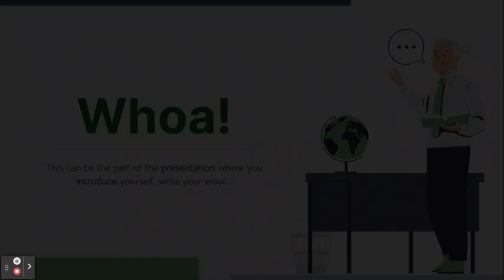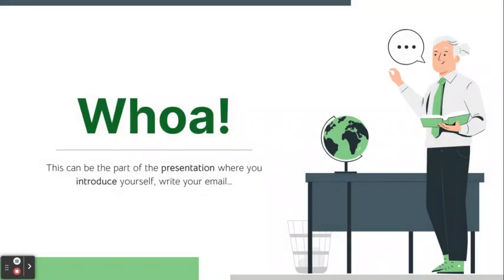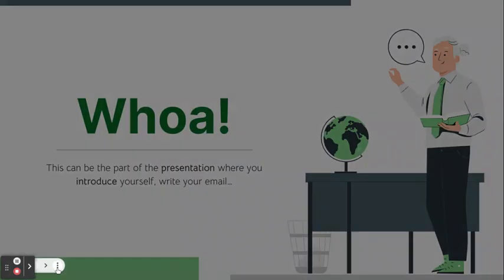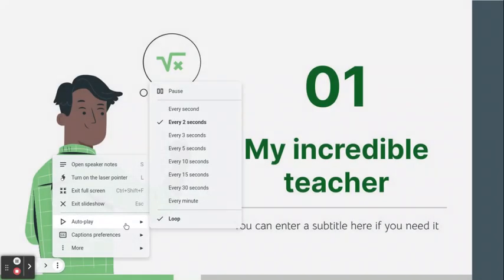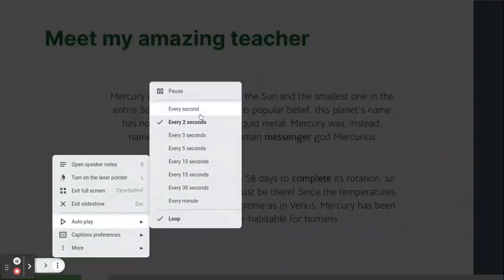And so this is how you can loop your presentation and you can set your time. If in the middle you realize that this is too fast or maybe it's too slow, you can always click on the three dots, autoplay, and you can change it, and it will adjust.